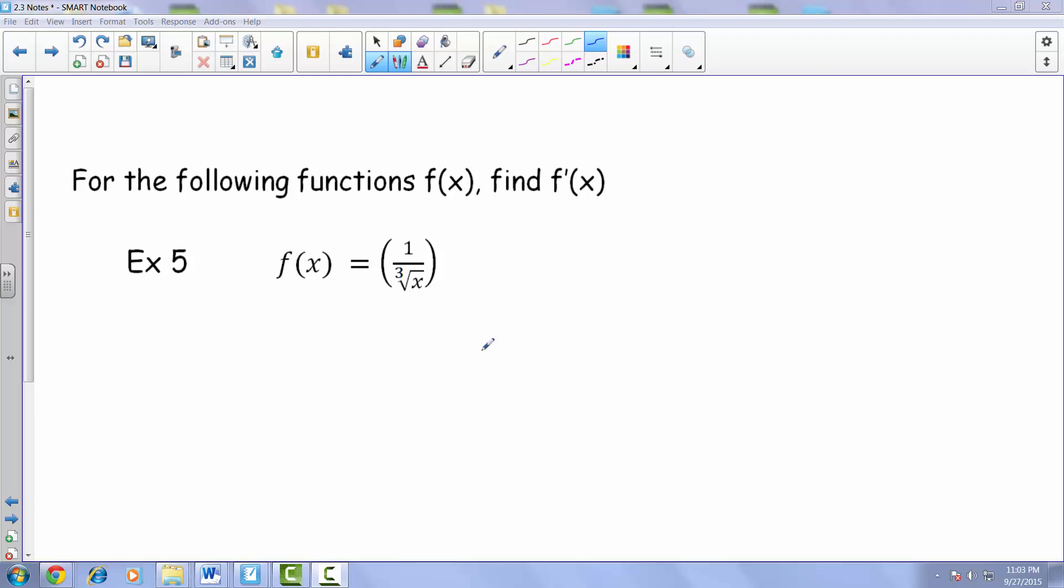Here we're looking at example 5 from our 2.3 notes. We're asked to find the derivative for the following function, and here it is: f of x is equal to 1 over the cube root of x.